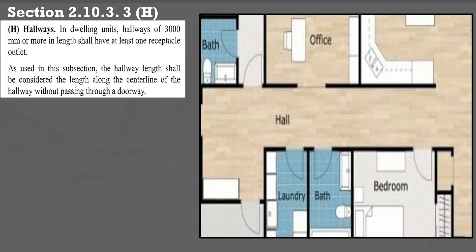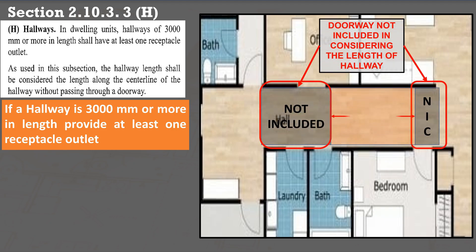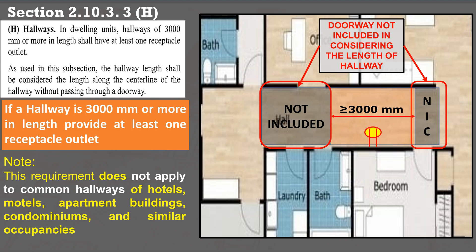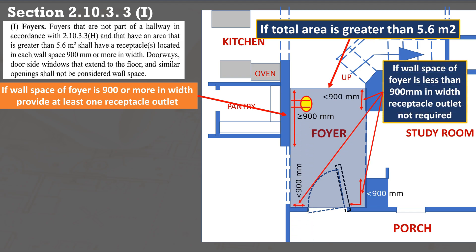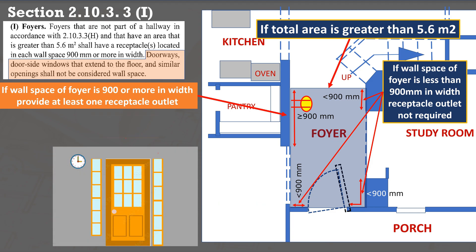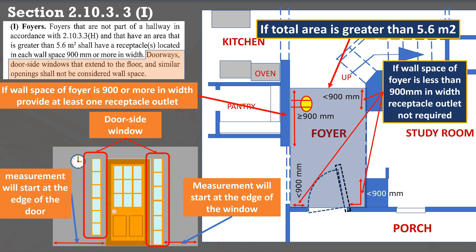For dwelling unit hallways as stated in subsection 2.10.3.3 H, if a hallway is 3,000 mm or more in length, provide at least one receptacle outlet. The hallway length is measured along the centerline without passing through a doorway. This requirement does not apply to common hallways of hotels, motels, apartment buildings, condominiums, and similar occupancies. If foyers are not part of the hallway and have an area greater than 5.6 square meters (60 square feet), a receptacle outlet is required in each wall space 900 mm or more in width. For doorways with door-side windows extending to the floor, measurement starts from the edge of those windows; if they do not extend to the floor, measurement starts from the edge of the door.